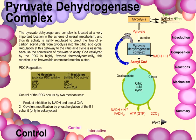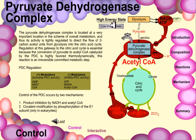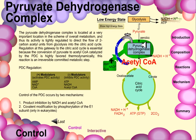Control of the PDC occurs through two mechanisms: first, product inhibition by NADH and acetyl-CoA — if high concentrations of these products are present, all steps are inhibited; second, covalent modification by phosphorylation of the E1 subunit, which is only applicable in eukaryotic cells, as prokaryotic cells do not have this mechanism. In a high-energy state with high NADH and high ATP, the PDC is shut down. In a low-energy state with low NADH and low ATP, the cell is forced to generate acetyl-CoA to carry out the citric acid cycle and oxidative phosphorylation to generate energy, so the PDC is activated.